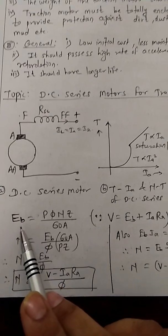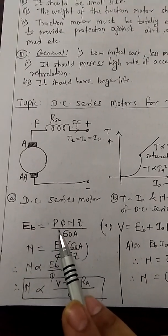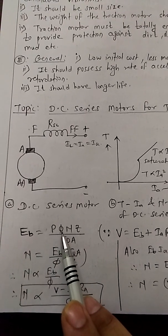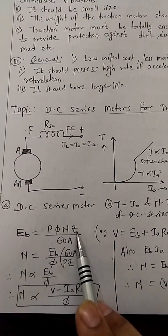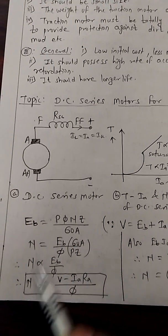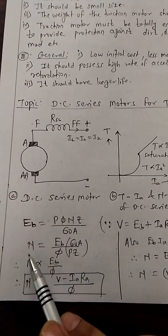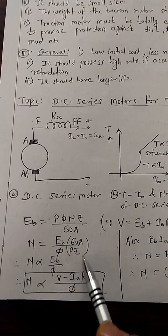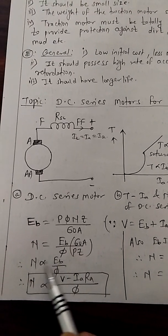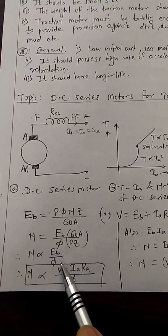You know the back EMF for DC series motor, that is P Phi NZ upon 60A. P is number of poles, Phi is flux, N is speed, Z is number of conductors, A is parallel path. Once you simplify the equation, other parameters are constant and back EMF and flux is variable. So speed depends on back EMF and field flux.